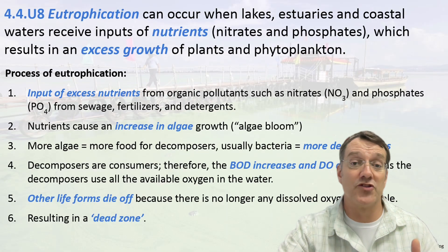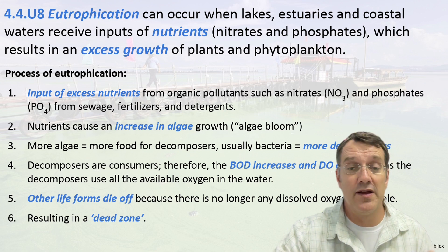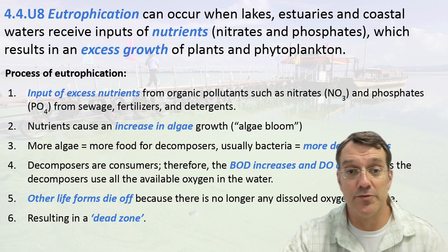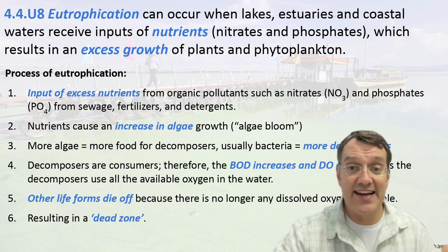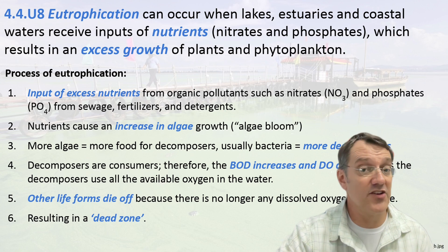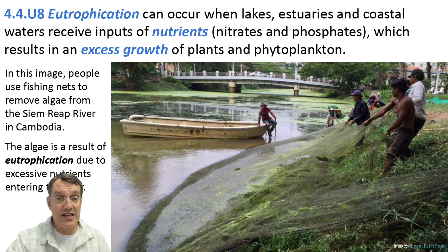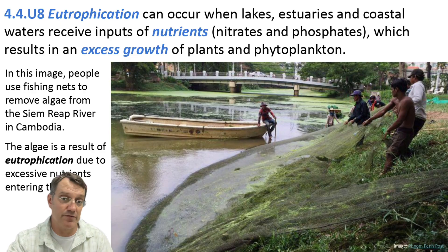The process of eutrophication follows a predictable pattern. First, excess nutrients enter the water. Second, that triggers algal blooms. Third, when those algae die, their decomposition depletes oxygen from the water. And fourth, that creates an anoxic condition — a condition without oxygen — that kills fish and other aquatic life. Here we see efforts to manage eutrophication in Cambodia's Siem Reap River, where workers physically remove algae. While this addresses the immediate symptom, long-term solutions must target the sources of the nutrient pollution in the first place.